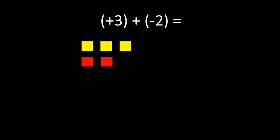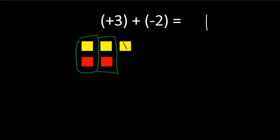Now, when we have a yellow tile and a red tile, we always make a zero pair. One yellow tile and one red tile will always make one zero pair. We have another red tile and another yellow tile, so let's make another zero pair. After we are done making our zero pairs, we count how many tiles we have left — we have one tile, so let's write down 1. We have one yellow tile, and yellow means positive, so positive 3 plus negative 2 is positive 1.